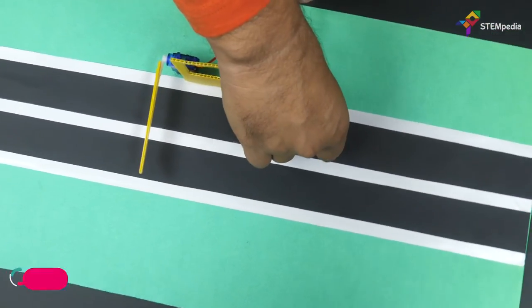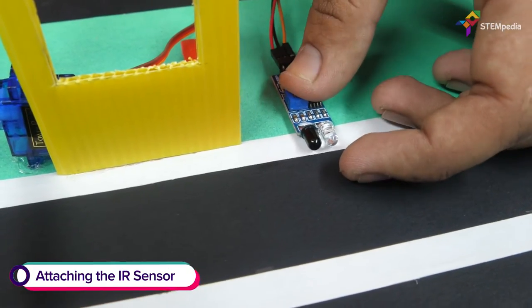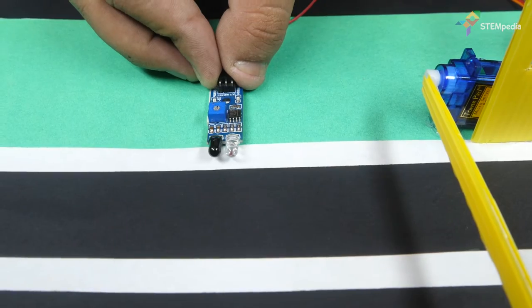Now, let's attach the IR. Attach one of them at some distance ahead of the toll booth and one at some distance behind the toll booth.